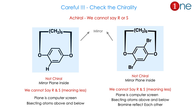A warning: be careful while analyzing R and S structures. Do not attempt to find R and S configuration if the molecule itself is not chiral. Some structures have a mirror plane of symmetry — the computer screen plane reflects the atoms perfectly — making the molecule achiral. Even if bromine is present, if it has an exact mirror plane, you cannot assign R or S. Sometimes people get confused by this — always check whether the molecule is actually chiral before assigning configuration.